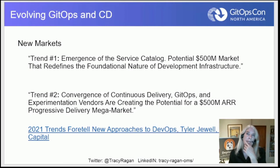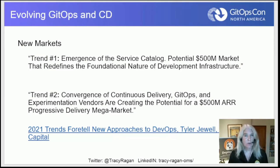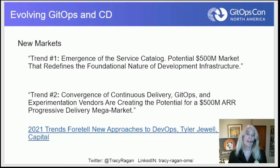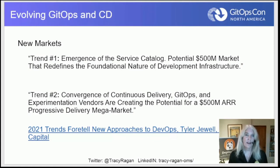This new market is starting to emerge around the service catalog. There's a great article by Tyler Jewell — if you don't follow him, I highly recommend you do, he writes well-researched articles. Recently he forecasted two trends: one, the emergence of the service catalog, and two, the convergence of continuous delivery and GitOps and the new market that will create. Both the service catalog market around microservices, along with this convergence of GitOps and continuous delivery, is really starting to create this new marketplace.